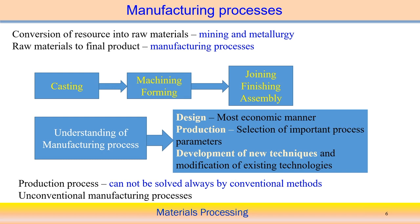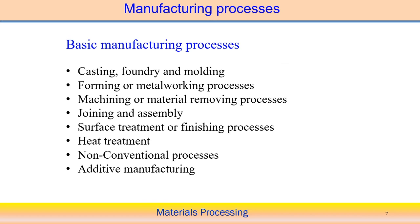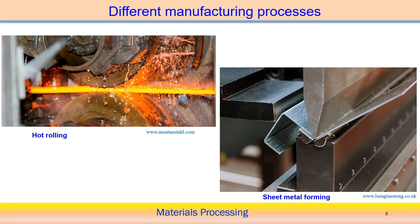The basic manufacturing processes in this syllabus are: casting, foundry, and molding; forming and metal working processes; joining and assembly including welding processes; surface treatment and finishing processes; heat treatment; non-conventional manufacturing processes; and finally additive manufacturing processes. For additive manufacturing, we will explain different processes associated with particular materials that have been developed so far.